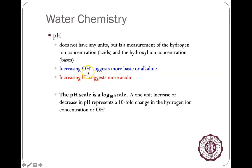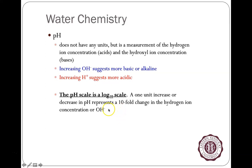Hydroxyl groups (OH) — think of OxiClean or sodium hydroxide used in drain cleaners — make solutions more basic or alkaline when present in large amounts, resulting in high pH values. The pH scale runs from 0 all the way up to 14.